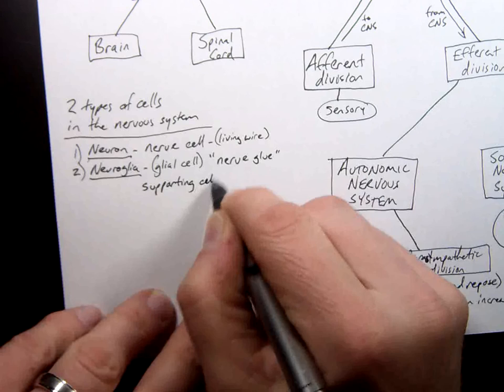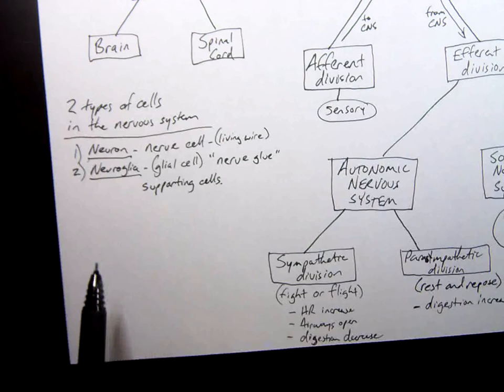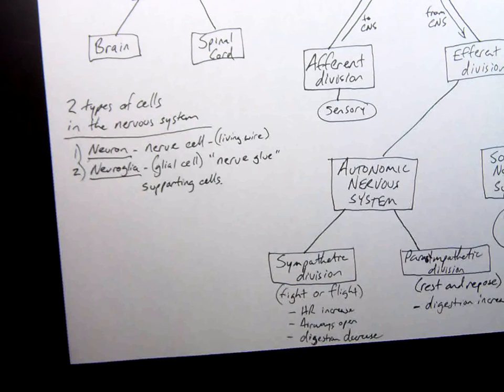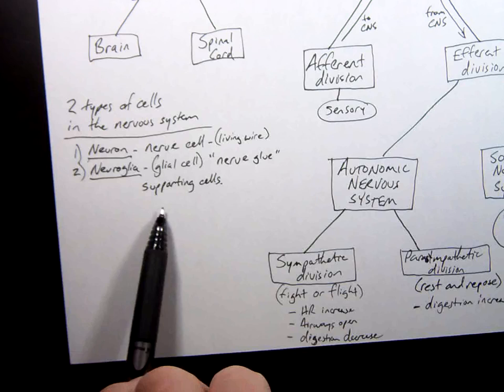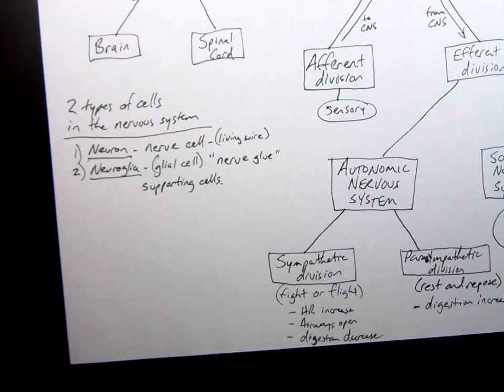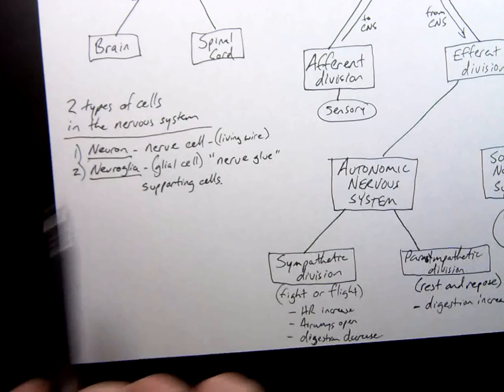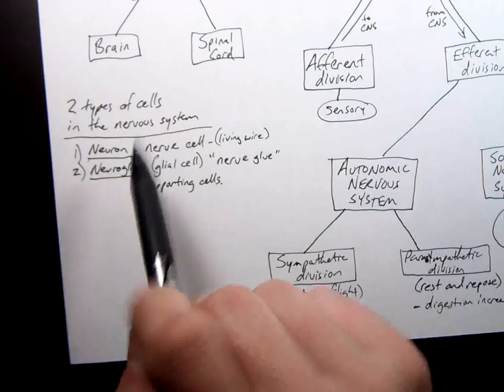That surround our neurons. Basically they do lots of different functions. Some of them include they will remove or eat the trash around the nerves like the debris. They will surround and insulate the neurons. Some of them are responsible for producing cerebrospinal fluid. They do a lot of different support functions. So neurons cannot really do their job without neuroglia taking care of and supporting them to be able to do that job. So that's basically it. Now there's a number of different types of these. We'll get into more detail on that later but this is sufficient for today.